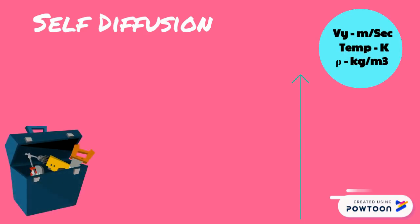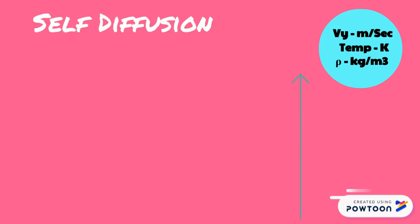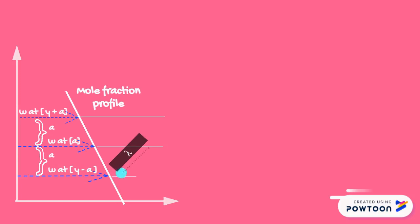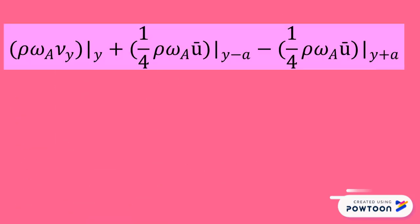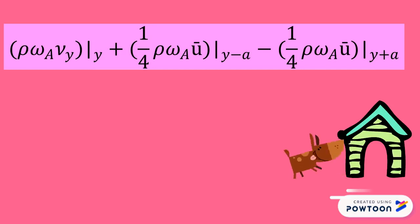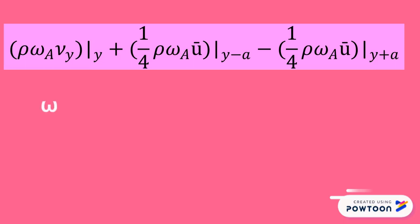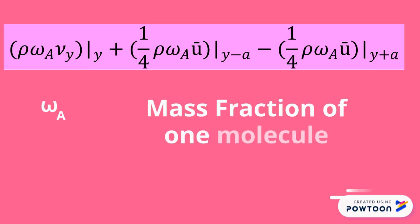It is a necessary tool to remember the kinetic theory of gases while going through this derivation. If the last collision occurred at plane W at a location Y-A, then the net mass flux of species A crossing a unit area of any plane of constant Y is given by the following simple mass balance equation: rho*omega_A*Vy at Y plus (1/4)*rho*omega_A*U_bar at Y-A minus (1/4)*rho*omega_A*U_bar at Y+A. Here, omega_A is the mass fraction of one molecule with respect to the entire system.